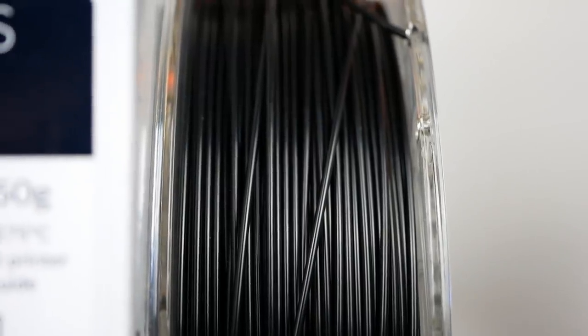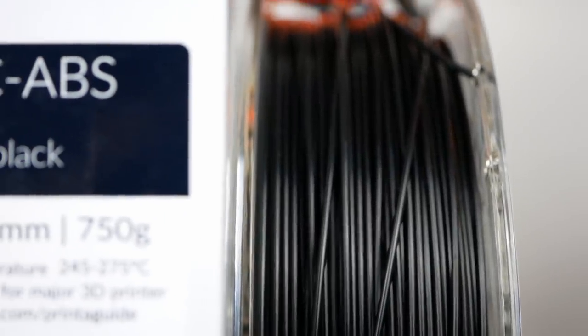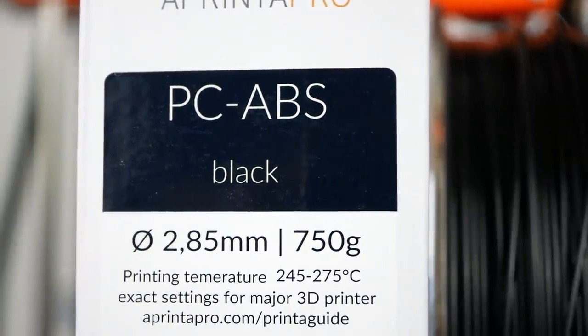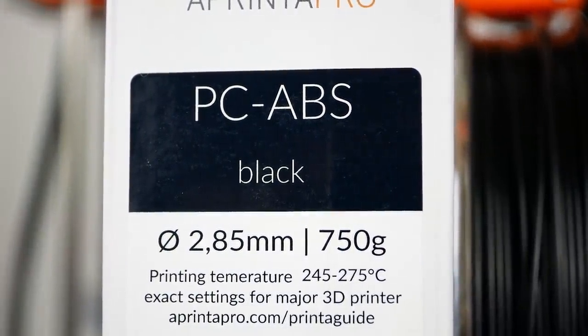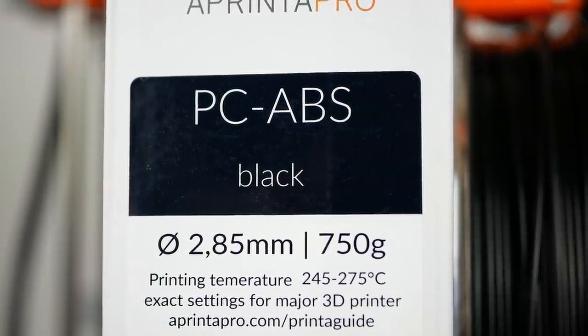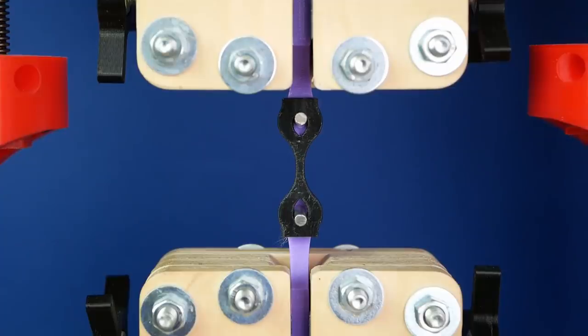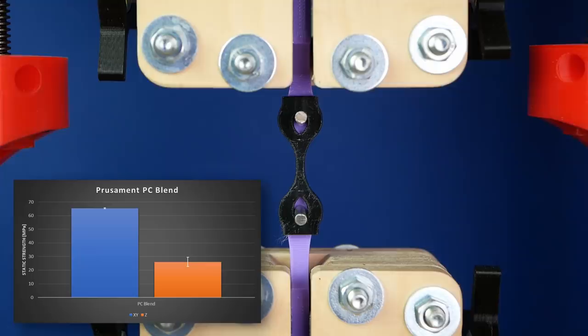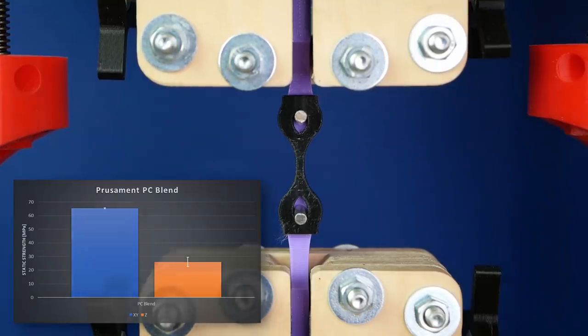So filament made from PC-ABS, which is a blend of the two materials, is something that is quite common. It helps combine different properties of the materials for specific needs. I have been using PC-ABS or other PC blends in the past and even though they show good overall properties, layer adhesion in particular is still something they're usually not great at.